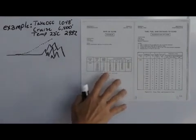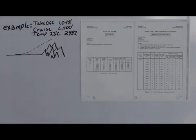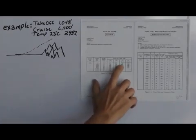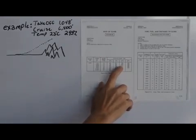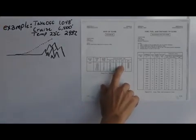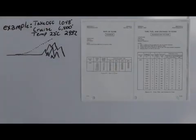Now keep in mind with all of your performance charts, they made those when the aircraft was new. So I would never completely trust that. I would probably choose the worst case scenario, which would be the 650 instead of interpolating between the two.